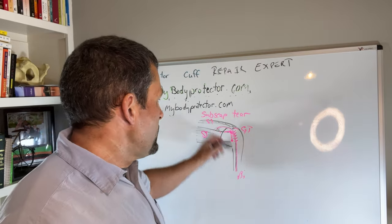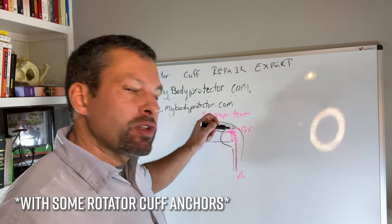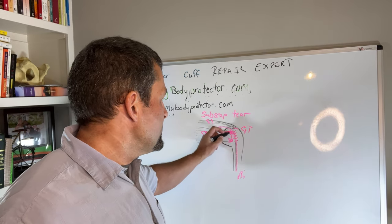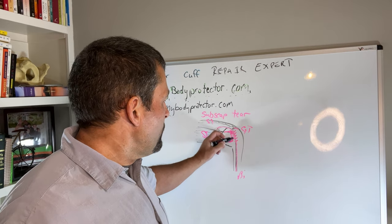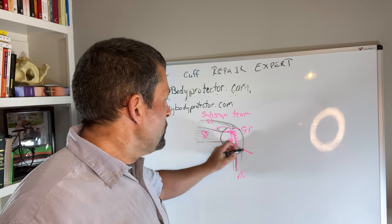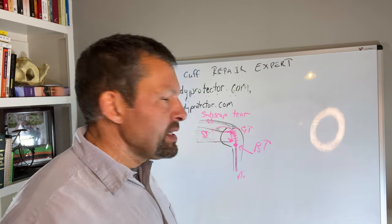So we do the open procedure, go in there and we repair the subscap again with some rotator cuff anchors that go into the bone and we tie this down. And then just down here a little ways, because we have some disease of the tendon of the biceps, just down here a little ways, we'll do what's called a biceps tenodesis.